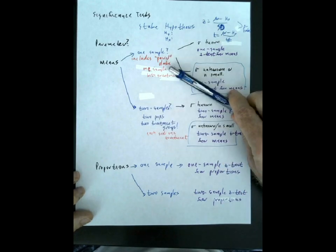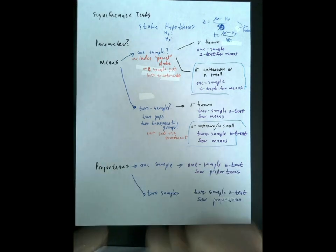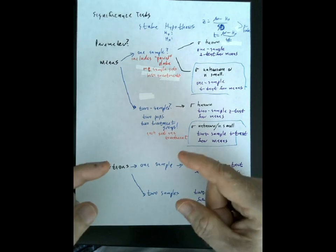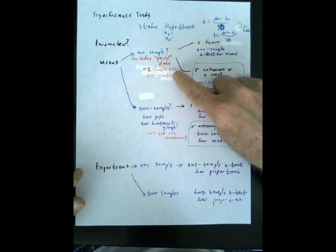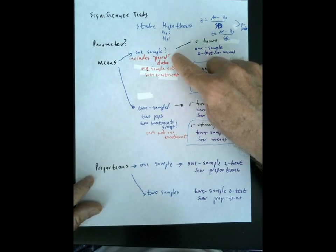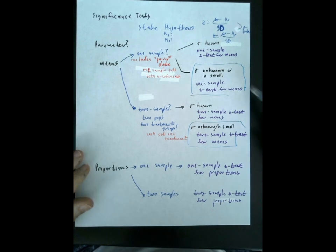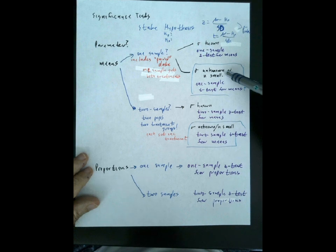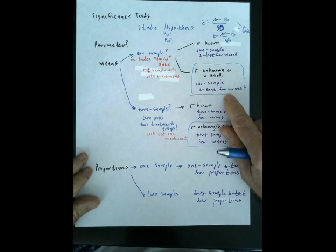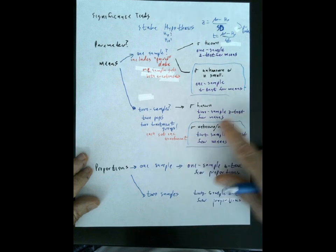For a one-sample significance test for means — and remember this includes paired data, where you have two different measurements on one set of individuals and you find the difference for each individual — since sigma is unknown or the sample is small, you're going to do a one-sample t-test for means.